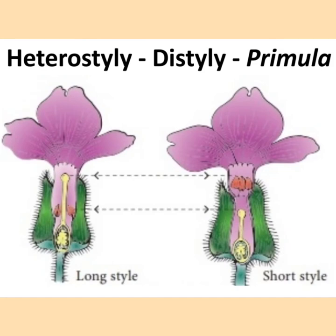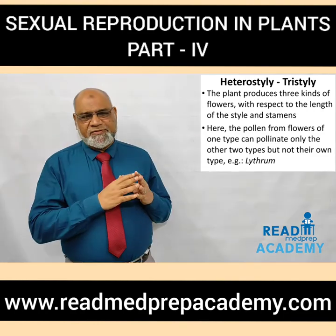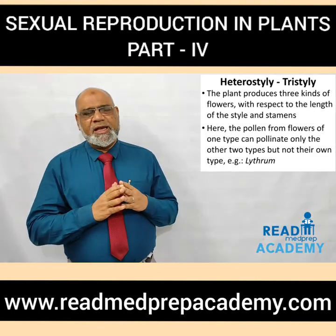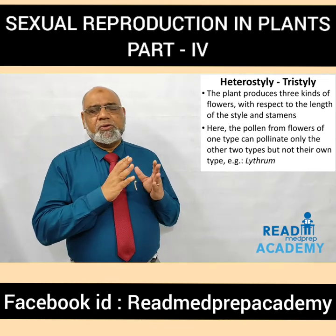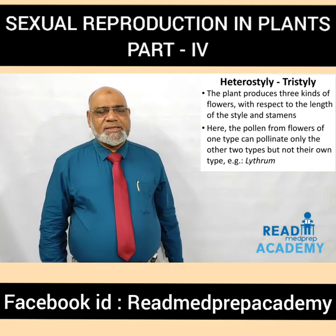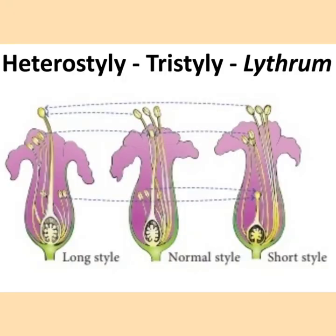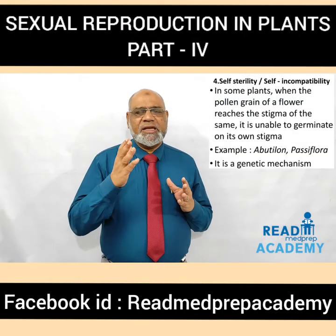In tristyly, the plant produces three kinds of flowers with respect to the length of the style and the stamens. Here the pollen from the flowers of one type can pollinate only the other two types but not their own type. Example: Lythrum. You can see in the example of Lythrum where three types of flowers are formed — on the left side a long style, in the middle flower a normal style, and the third flower a short style. What is self-sterility or self-incompatibility?